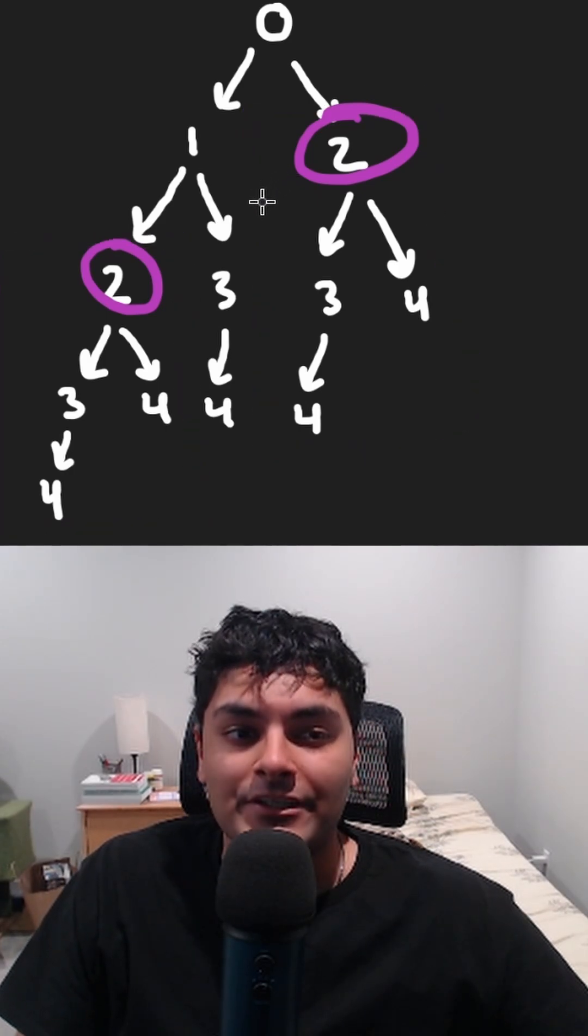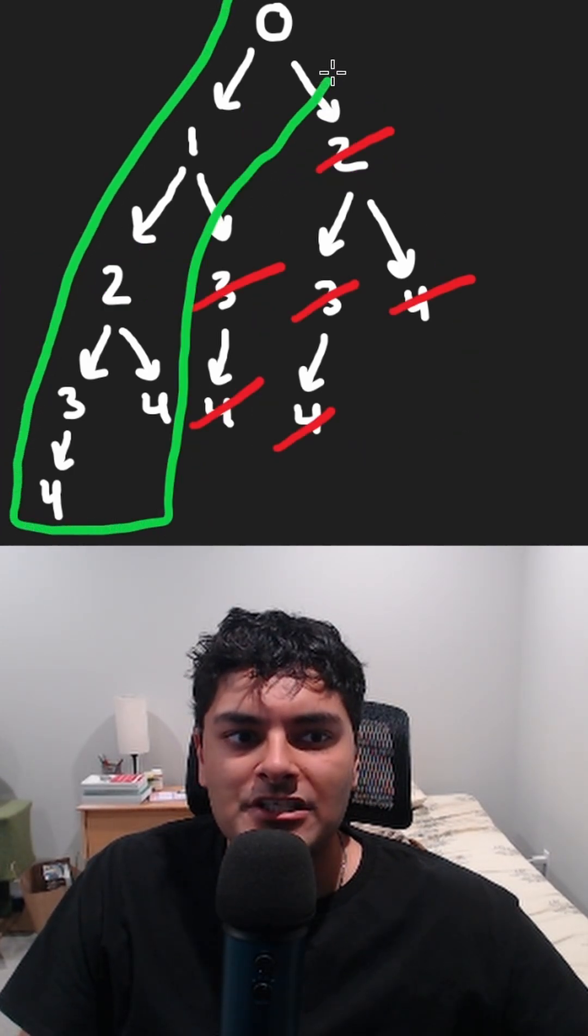If we eliminate these duplicate trees, we end up with something that looks like this, a straight line.